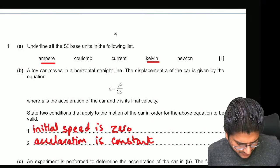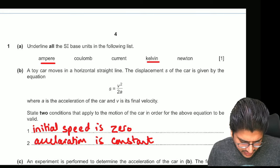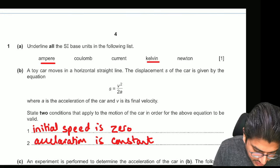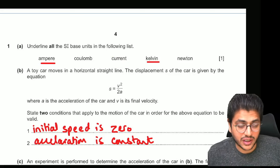And the third question. Underline all the SI base units. Again, ampere, kelvin, these are the base units. Current is not a base unit. It is a base quantity. Like I told you this earlier.